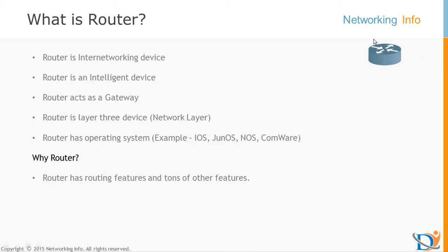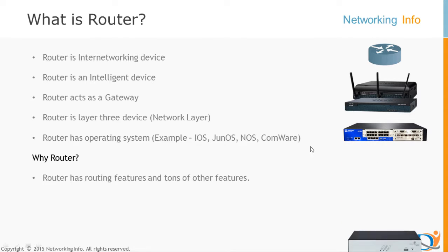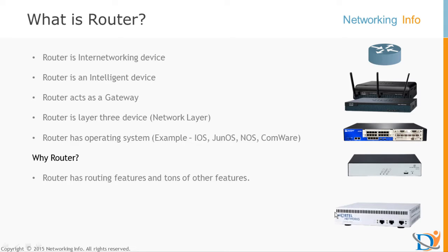This is the icon we must always remember — this represents a router. This device is from Cisco, this is a wireless device, and this is a router. This one is from Juniper, this is from HP, and this device is from Nortel. There are a lot of companies — local companies also — like D-Link, TP-Link, and some others.